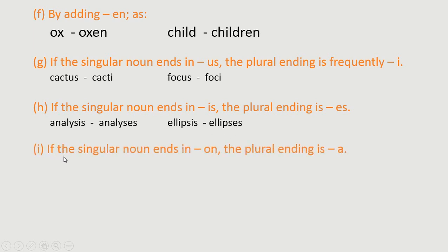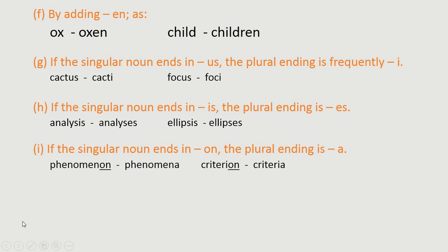Rule I: if the singular noun ends in -ON, the plural ending is -A. So when converting to plural, the ending becomes -A. For example: phenomenon→phenomena, criterion→criteria.